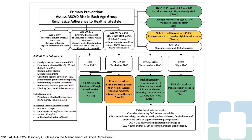Biomarkers are reasonable to check, including high-sensitivity CRP, ApoB, as well as lipoprotein A levels. For these intermediate-risk patients, we can also consider doing coronary artery calcium scoring, and if the calcium score is elevated, we can consider statin therapy as well for primary prevention.